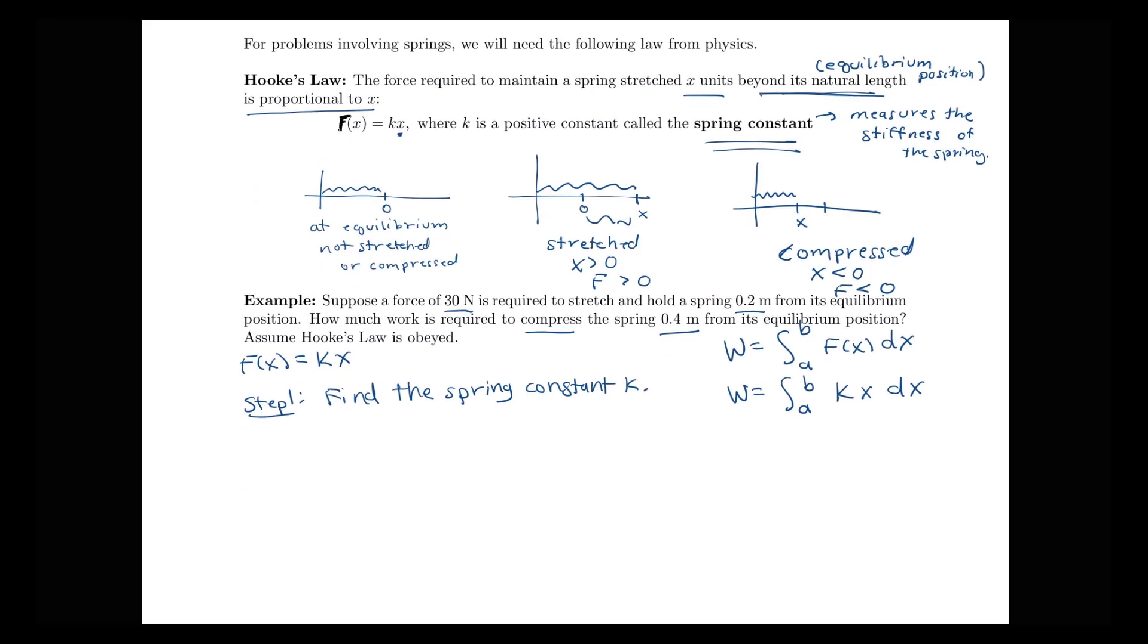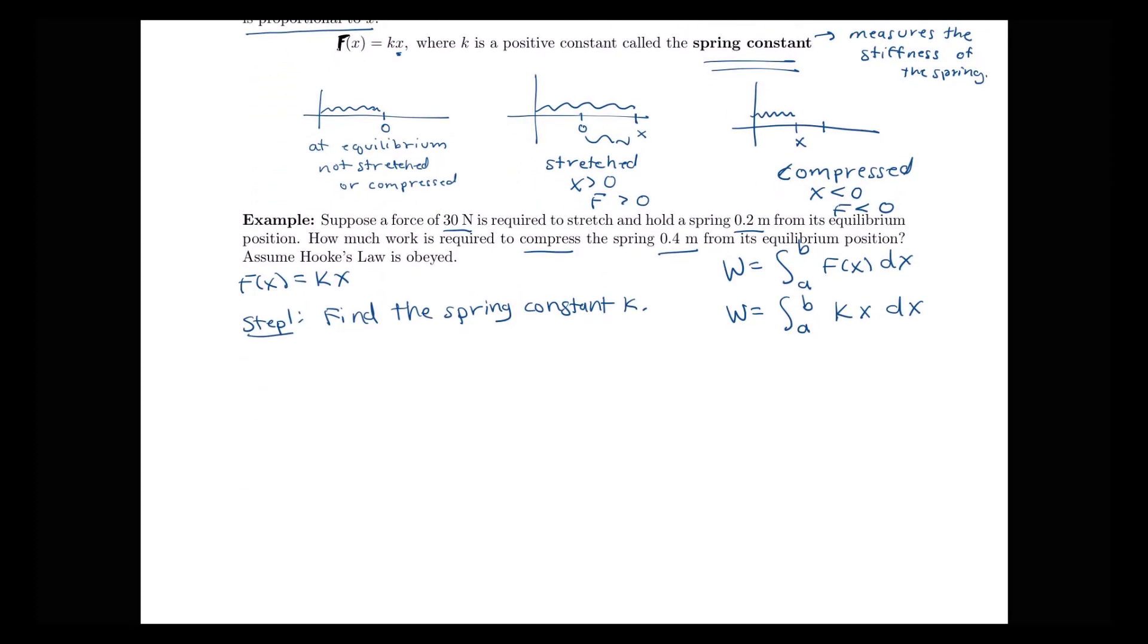So the first piece of information in this problem can be used to help us solve for k. So we know that we have this force of 30 newtons that's required to stretch our spring 0.2 meters beyond the equilibrium position. So we can go ahead and use x equals 0.2 in here. And we see that k is going to be 30 divided by 0.2. 0.2 is the same as 1 fifth. So we're going to have this spring constant of 150.